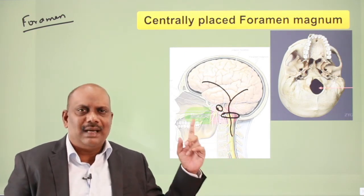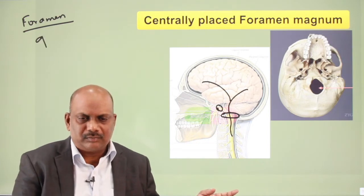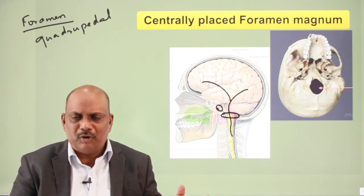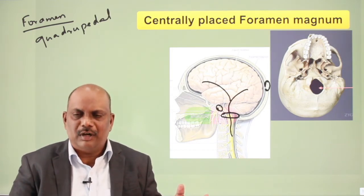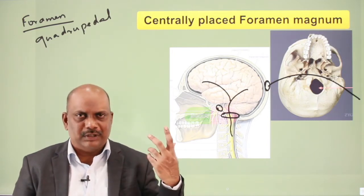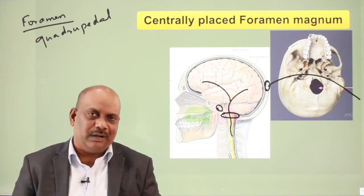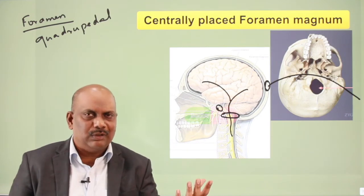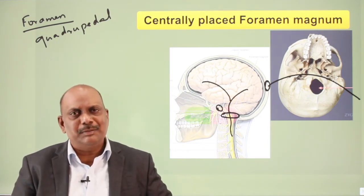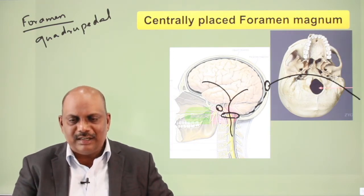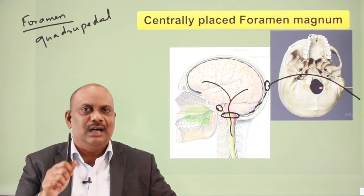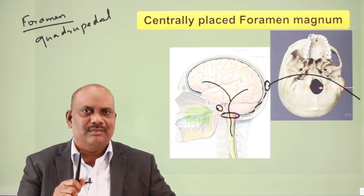When human ancestors were quadrupedal — walking on four legs — the foramen magnum was more posteriorly placed, and the vertebral column used to be single-arched. But slowly, in the process of getting erect posture — which took a few million years — the foramen magnum gradually declined and became more centrally placed. Even for Australopithecus, the foramen magnum is more centrally placed, which implies that Australopithecus had an erect posture and bipedal locomotion.